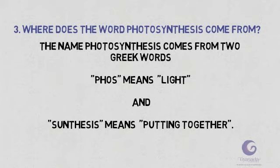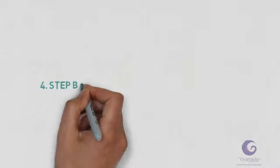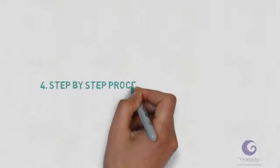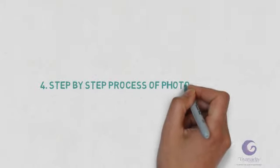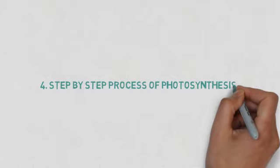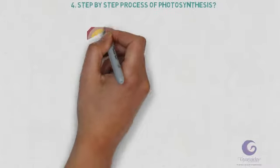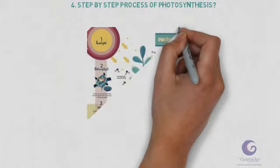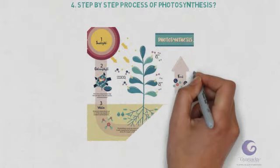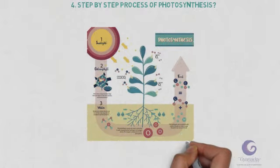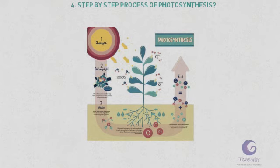Now we are on the fourth question: what is the step-by-step process of photosynthesis? This is very important, so listen carefully. Step one: the plant takes in carbon dioxide from the atmosphere through the stomata on its leaves, as you can see in the diagram.